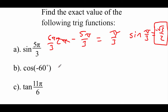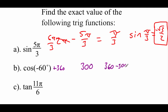Next one, we've got the cosine of negative 60. Again, we don't typically like to deal with negative angles, so I'm going to add on a 360 rotation. So really, we're looking at 300 degrees, and if we go 360 minus 300, we've got a 60 degree reference angle.